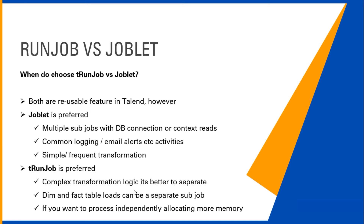tRun Job is preferred when you have complex transformation logic. It is always better to separate that logic so you don't make your main job bulky. More complex transformations go into tRun Job. For example, you may have dimension loads and fact table loads where the transformation logic within those table loads may not be the same, so those types of data loads can be done via tRun Job.